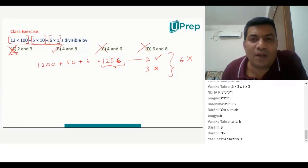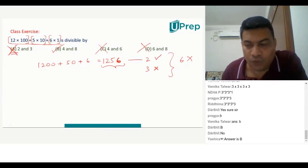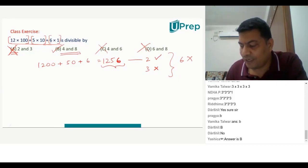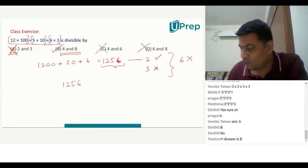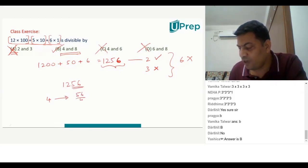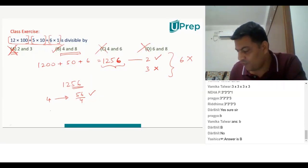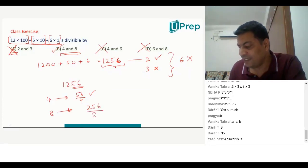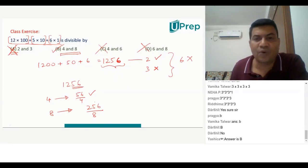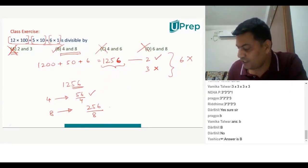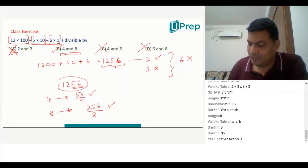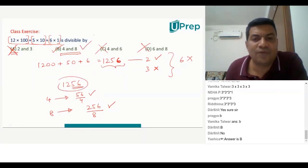Not every time will you be this lucky — at times you need to check also. Let's check whether 1256 is divisible by 4 and 8. What is the divisibility rule for 4? We check the last two digits. Is 56 divisible by 4? Yes, it is. How do we check for 8? We check the last three digits: 256. Is 256 divisible by 8? Yes — 8 times 3 is 24, carry 1, making 16, and 8 times 2. So 256 is divisible by 8. Therefore 1256 is divisible by both 4 and 8, and your answer is option B.